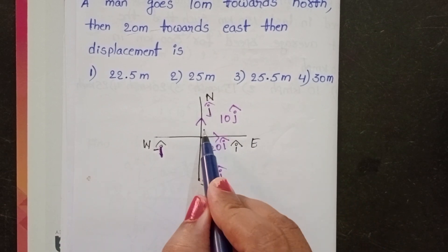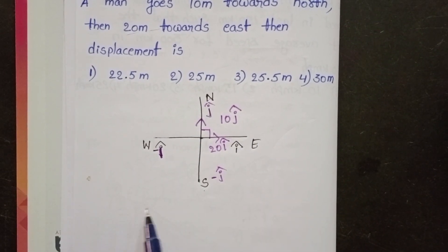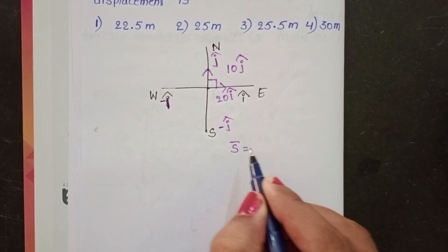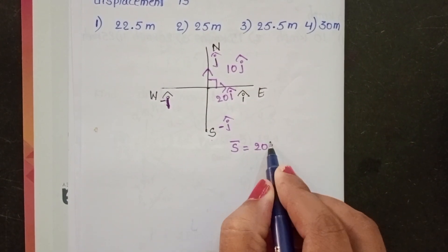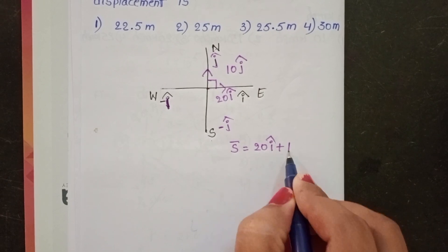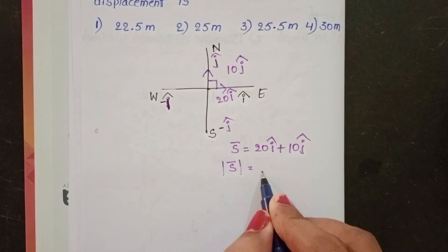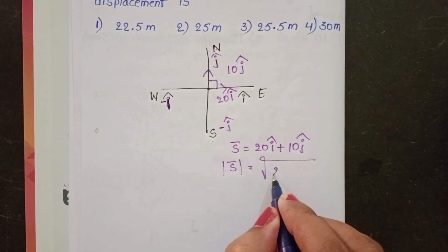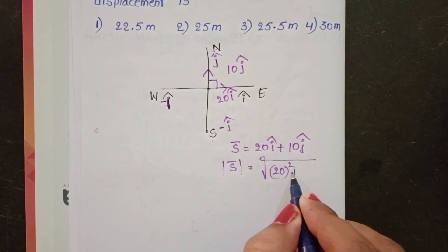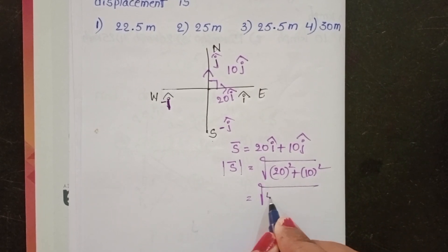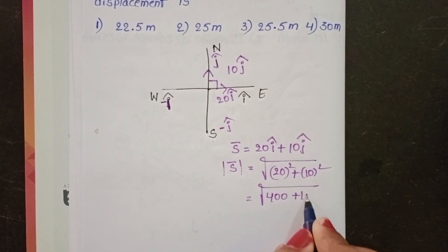The angle between these two directions is 90 degrees. We have to find out the displacement. Displacement s bar equals 20 i cap plus 10 j cap. Now the magnitude of the displacement equals square root of 20 whole square plus 10 whole square. Square root of 400 plus 100.